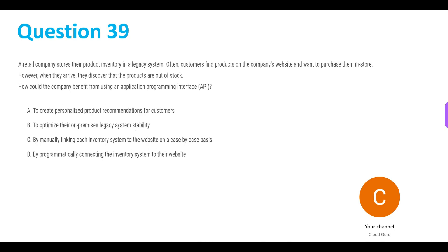Let's head on to the last question of this part, question 39. A retail company stores their product inventory in a legacy system. Often, customers find products on the company's website and want to purchase them in-store. However, when they arrive, they discover that the products are out of stock. How could the company benefit from using an application programming interface, or API?